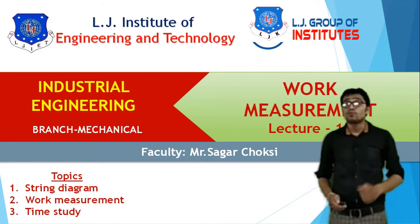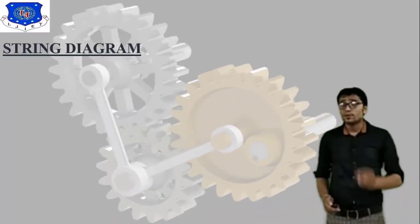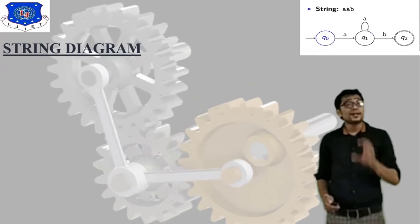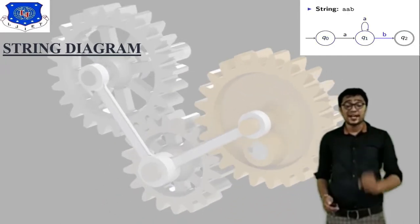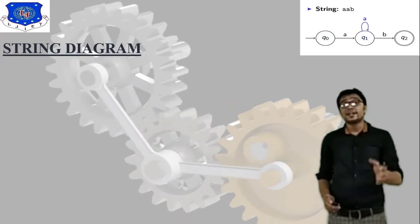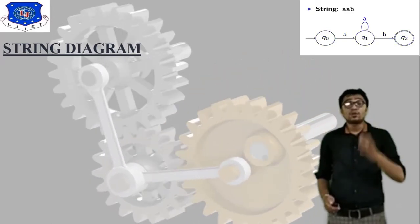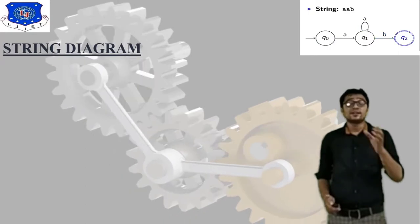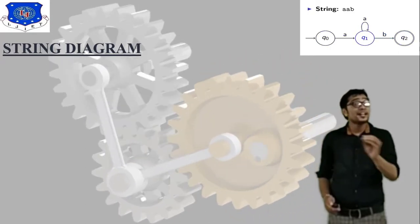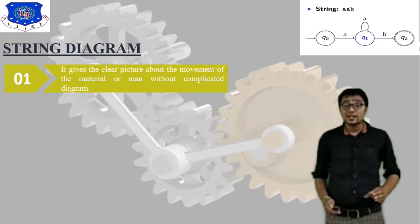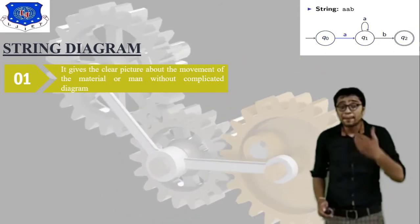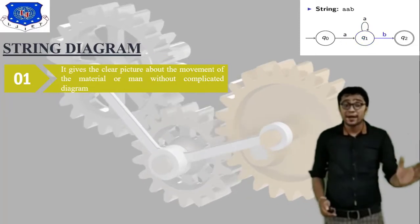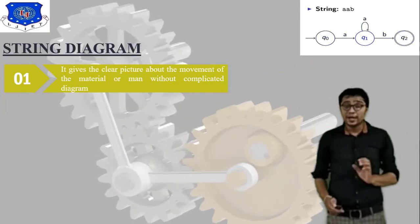This is Lecture 16, related to work measurement. First, what is a string diagram? I have added one image here so you can directly understand the concept. String diagram is basically related to material flow and machining flow. It gives a clear picture of the movement of material or man without a complicated diagram.